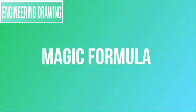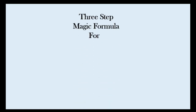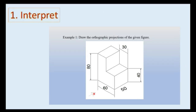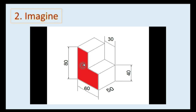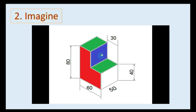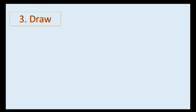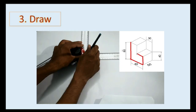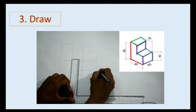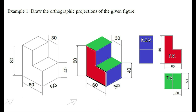For solving questions throughout this course, I will apply a three-step magic formula for solving engineering drawing questions. These three steps will be: interpret, imagine, and draw. In the first step, interpret, I will explain the question completely. Then I will make you imagine the solution in a very simple way that anyone can understand. After seeing the solution, I will draw it on the actual drawing sheet with drafter and pencil, so that you will have no doubt and will easily grasp the concepts.